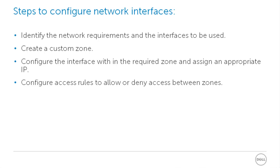To configure network interfaces, we need to first identify the network requirements and the interfaces to be used. We then create a custom zone, configure the interface with the required zone, and assign an appropriate IP. Finally, we configure access rules to allow or deny access between the zones.